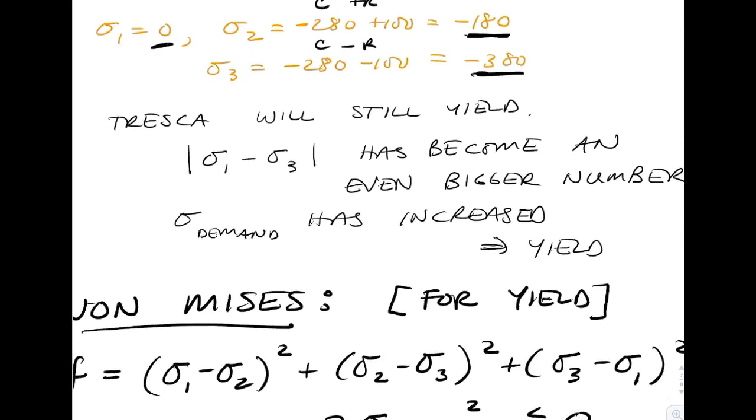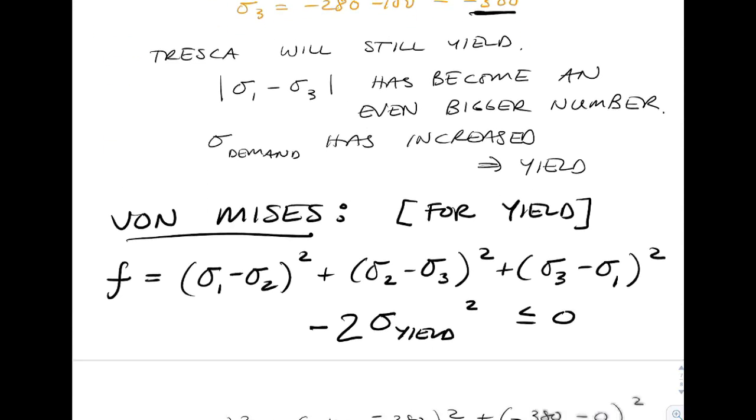For Tresca, we already know that yielding has been predicted, so it would only be increasing the sigma 1 minus sigma 3. The demand is only increasing, so the yielding remains.